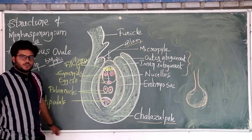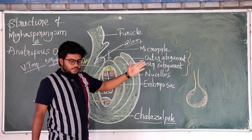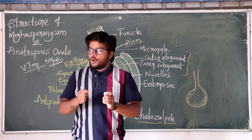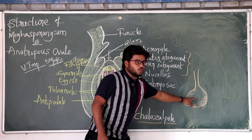So the structure of Anatropous Ovule. The Ovule is called as the Megasporangium. This Ovule is a small structure present inside the ovary.